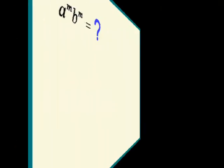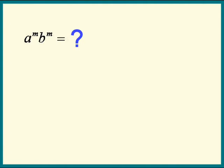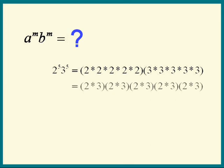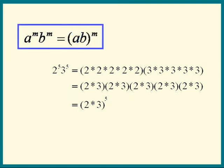How about a to the m times b to the m? We'll use two to the fifth and three to the fifth as our example. Look at the factors — we can group them any way we want, so let's group them as two times three factors. See five of them. So a to the m times b to the m can be written as a times b, all to the m.